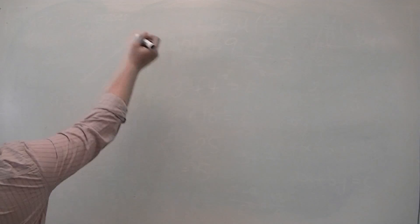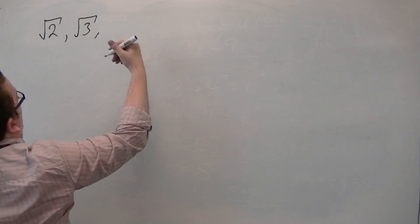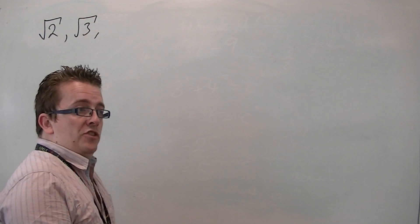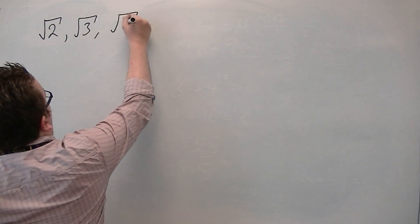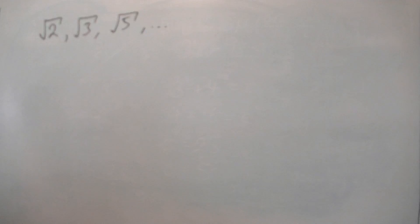And we call these surds. So examples are root 2, root 3, obviously not root 4 because that is just 2. Then you've got root 5, etc. These are all surds. These are all irrational numbers.